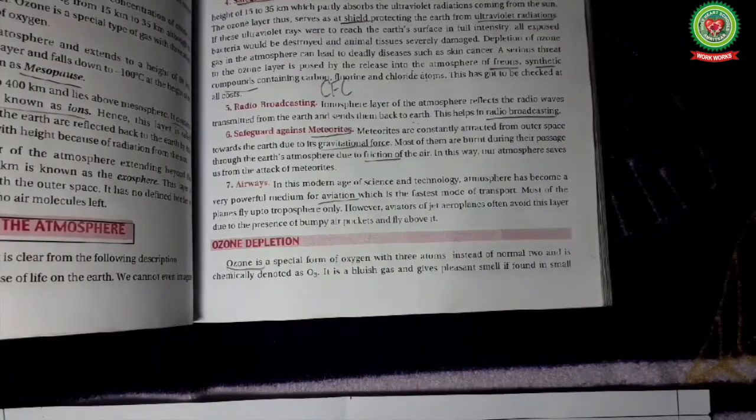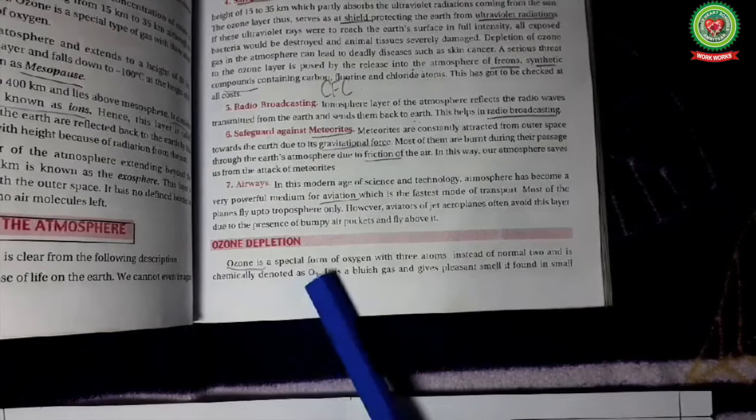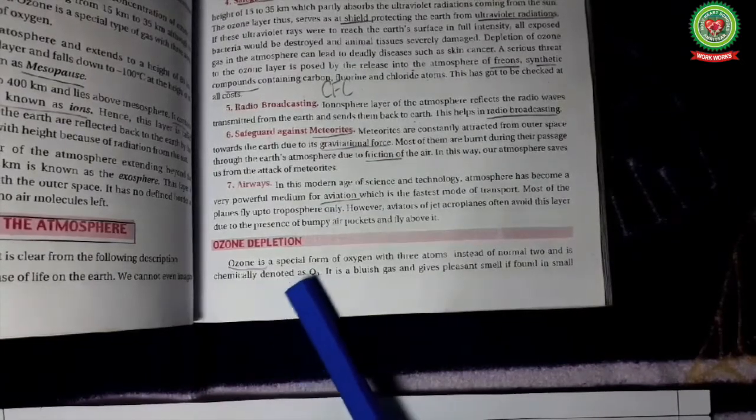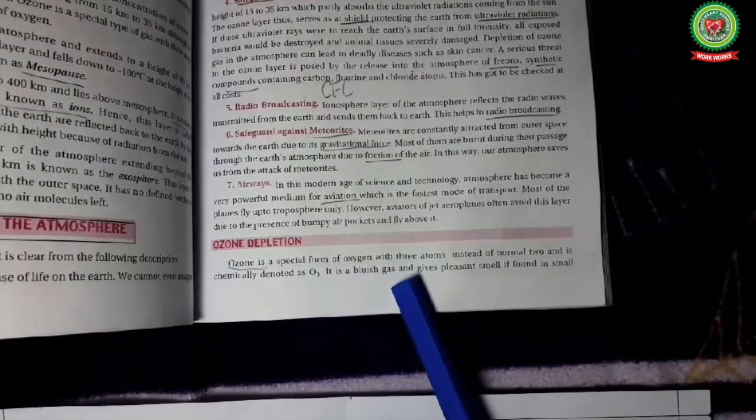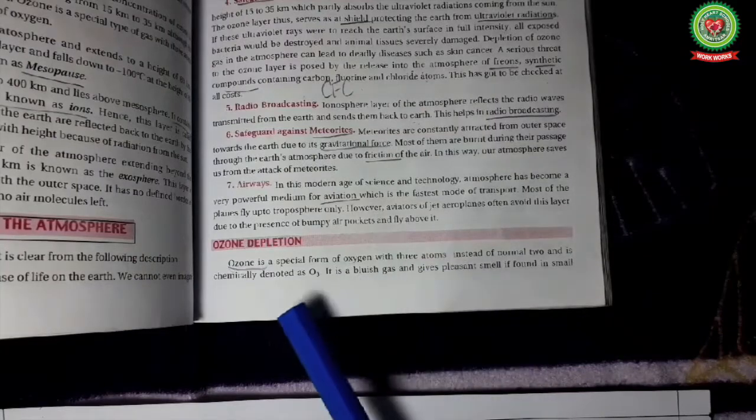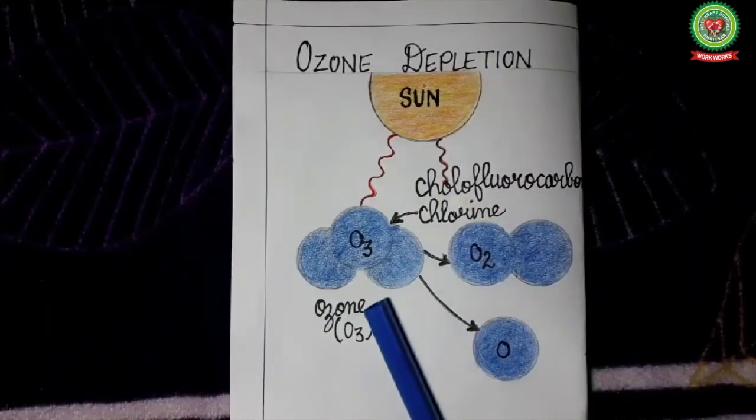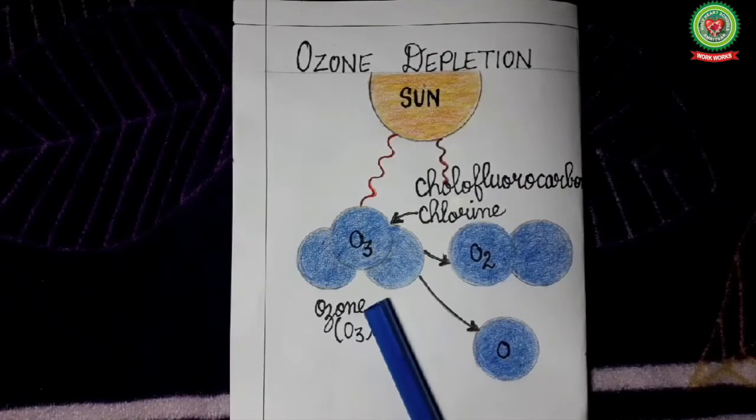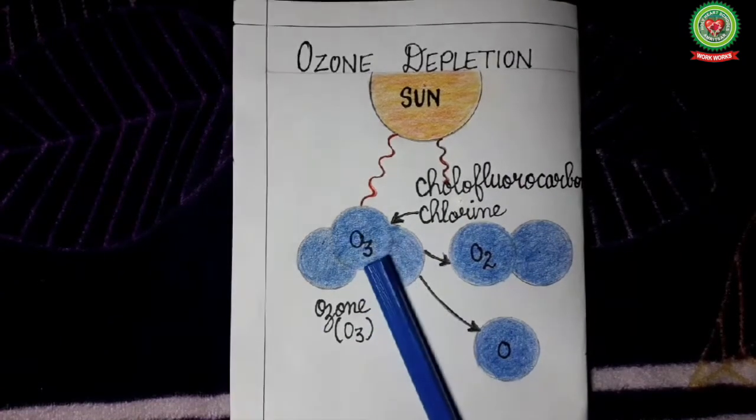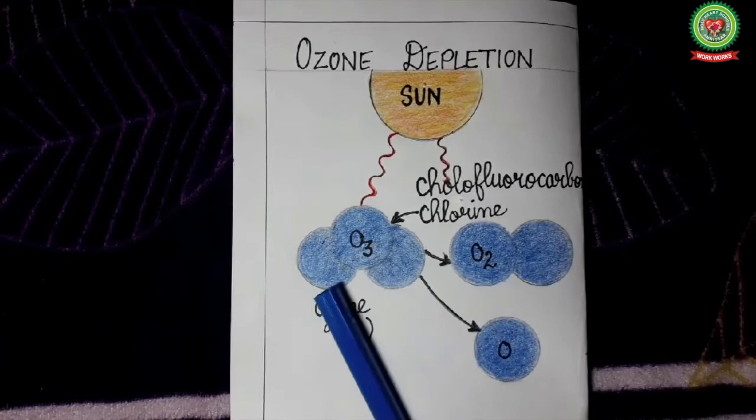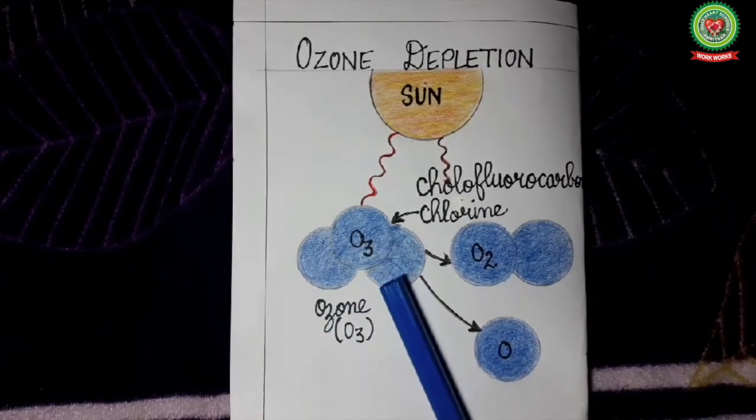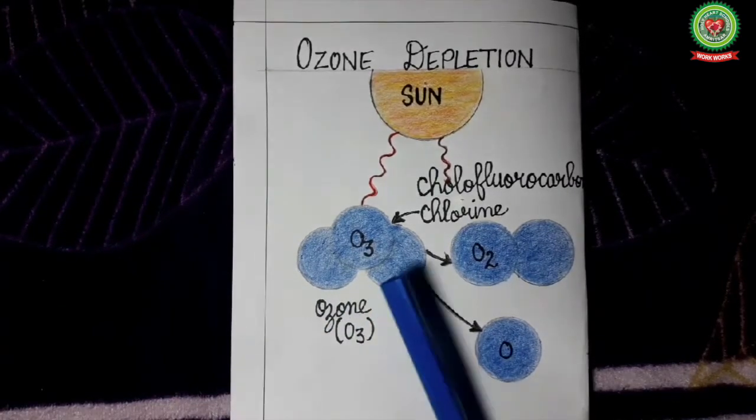Now we will study about ozone depletion. Ozone is a special form of oxygen with three atoms of oxygen. Ozone is a blue color gas which is shown by symbol O3. It means that it has three atoms of oxygen.